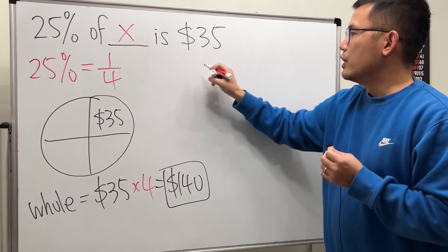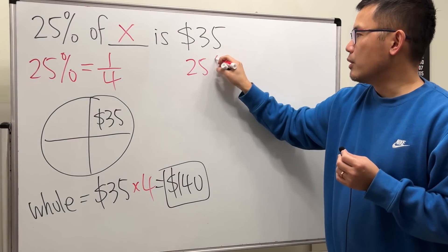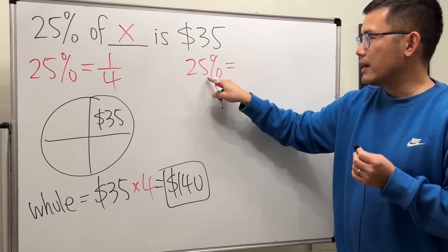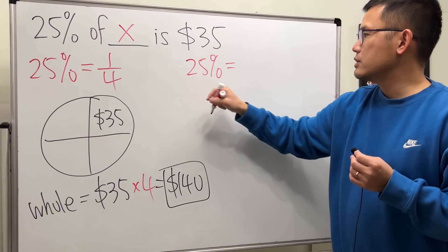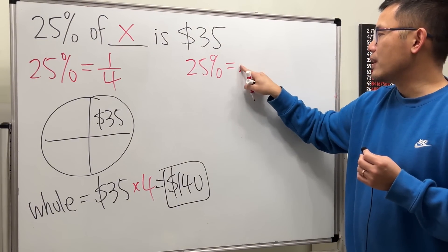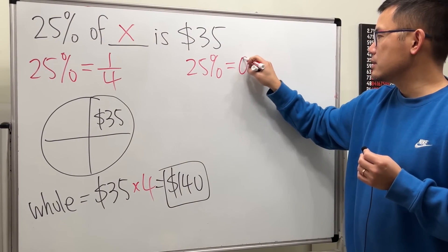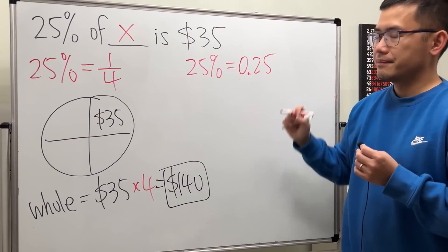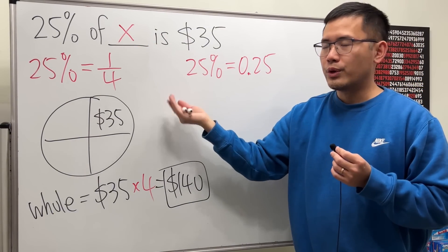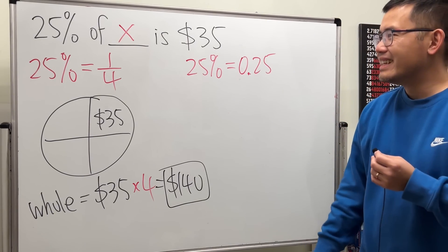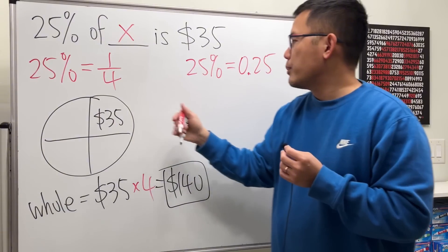25%, you are going to first change that to decimal. To do so, you take 25 and put a decimal point twice to the left, so you get 0.25. Always change the percentage to a decimal when you write down an equation. So let's write down 0.25.